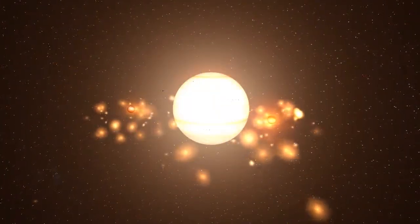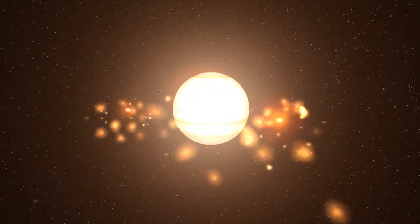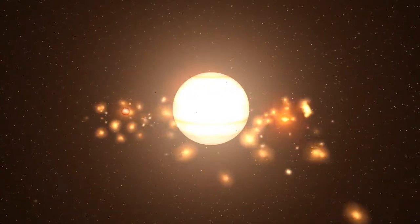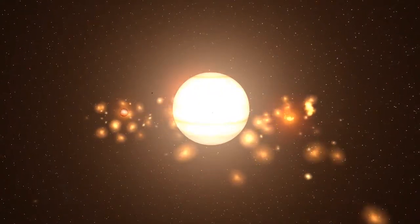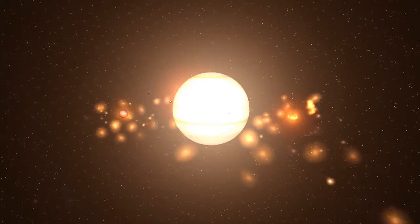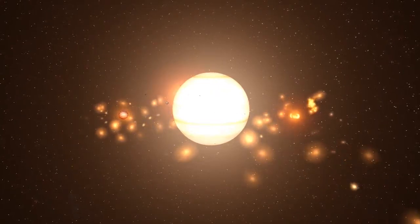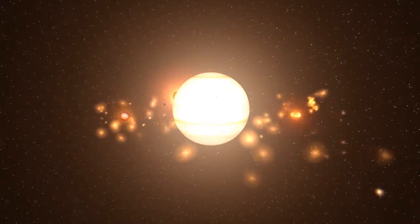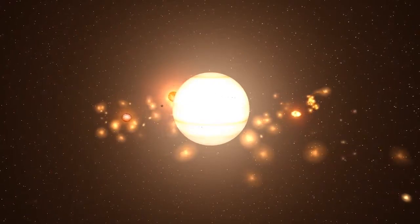After forming, the new protostar continues to collect dust and gas from the cloud it was formed in. The star is mostly made of hydrogen and a bit of helium. Right now, this is the first stage of the star's evolution. Some stars can actually fail here if they do not collect enough mass, so the fusion process can begin.